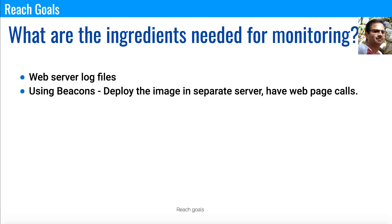You can also use beacons. Beacons are nothing but an image which is deployed in a separate server, and you add the link to that image into all your web pages. Instead of monitoring in your Tomcat logs or WebLogic logs, you can monitor or get a lot of information from the server where the beacon image is deployed. It won't give as much information as server logs, but it's an alternative.